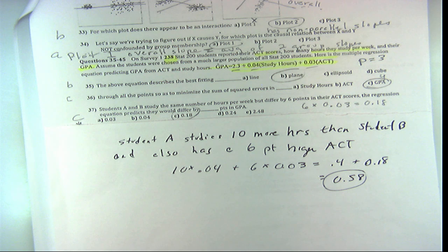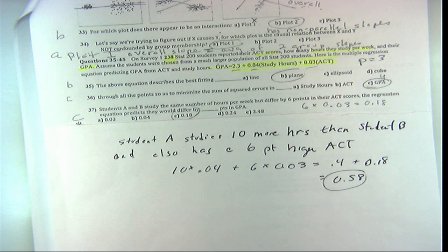With one slope it's a line, with two slopes it's a plane. What would it look like if there were three slopes? We wouldn't be able to visualize it because we can only visualize three dimensions—we'd be in four dimensions. The math is exactly the same; you're just in dimensions our minds can't picture. But we do everything the same.